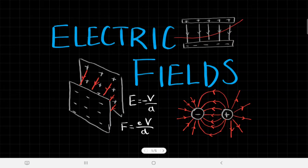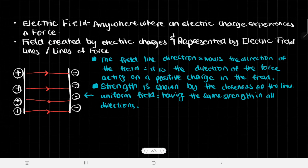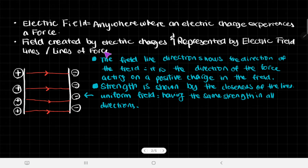This is all about electric fields — part of the AS Physics Syllabus in topic 8. The definition of an electric field is anywhere where an electric charge experiences a force. It's basically created by electric charges and represented by electric field lines, also called lines of force, as shown here.